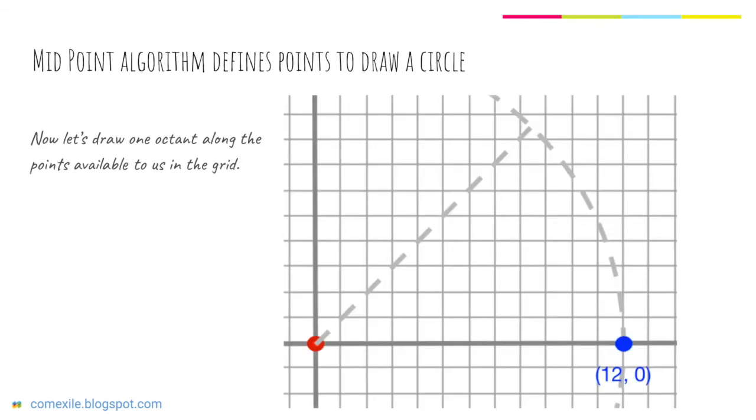Now let's draw one octant along the points available to us in the grid. We can notice a couple of things here. As you can see, we know the starting point which is (12,0).